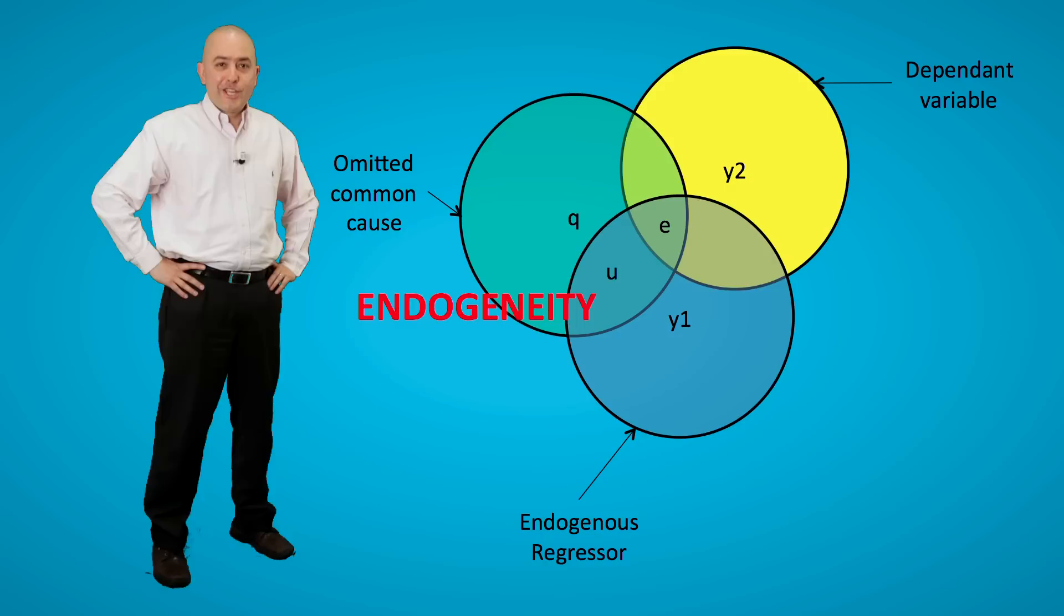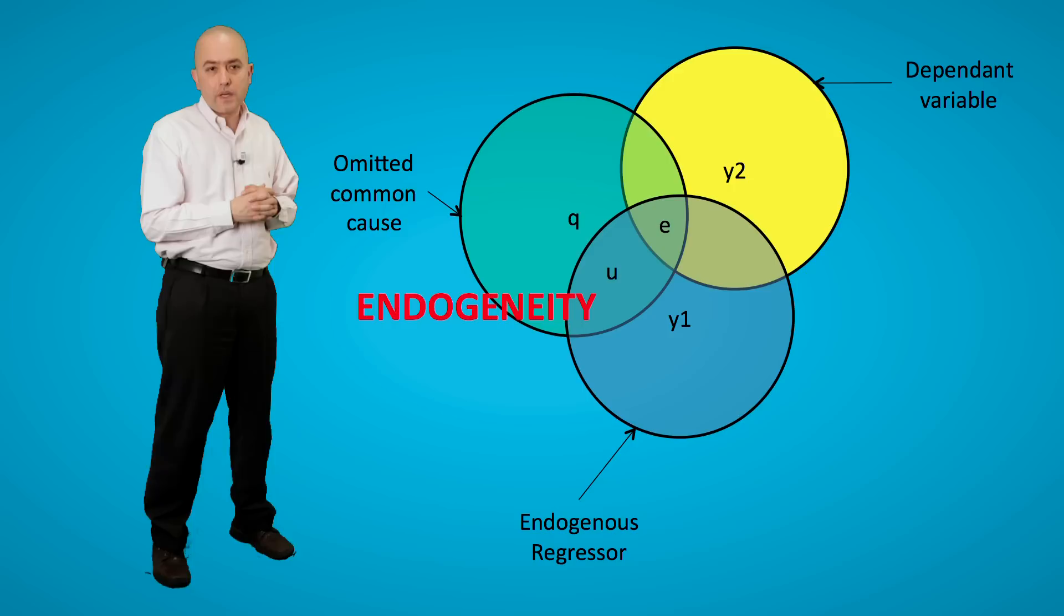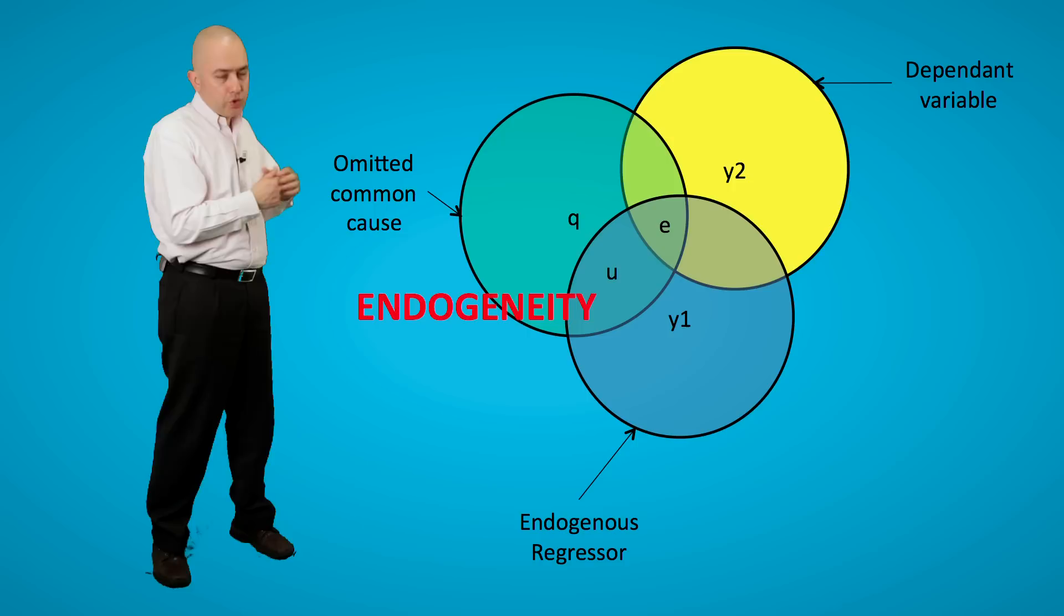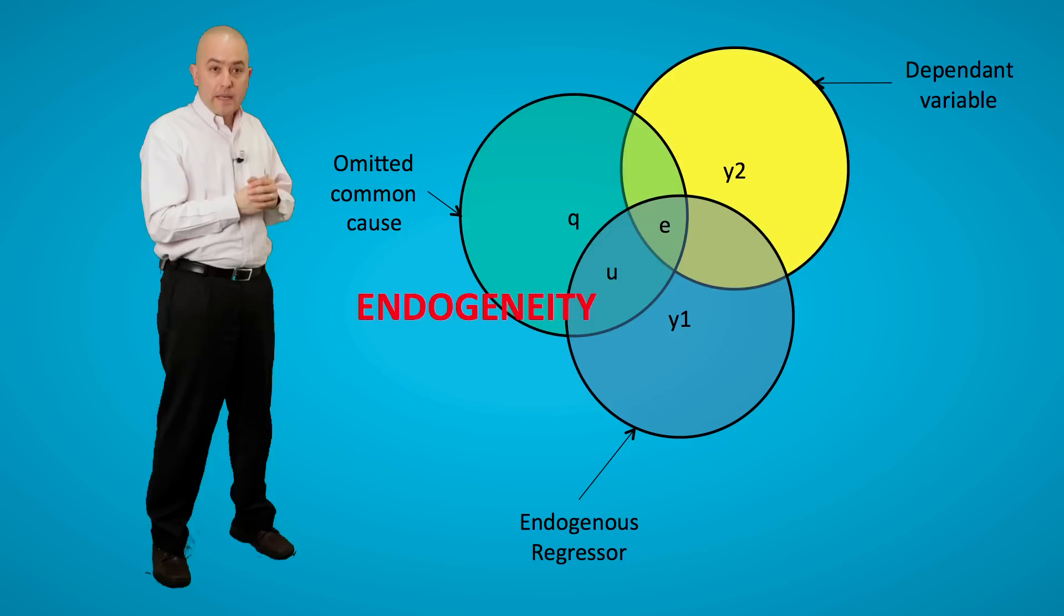However, we must model this causal structure correctly by correlating the cross-equation disturbances. Going back to our Ballantine's, so you can understand the nature of the problem, suppose we wish to estimate the relationship between Y1 and Y2, the causal relationship that is. Unfortunately, Y1 and Y2 share a common cause, which is Q. As you can see, the portion where Q overlaps with Y1 and Y2 is what is going to cause the endogeneity problem. This must be correctly acknowledged in the estimator.